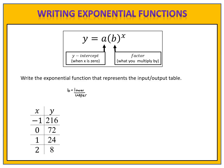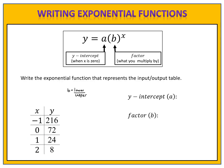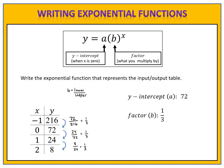In our next example, we're going to see something a little bit different. Look at the values in the y column — notice they are not increasing but rather are decreasing. That means our factor will be between 0 and 1; this is a decay function. The y-intercept, found where x is 0, is 72. Using the formula b equals lower divided by upper: 72 divided by 216 is 1 third, 24 divided by 72 is 1 third, and 8 divided by 24 is 1 third. So the factor is 1 third.